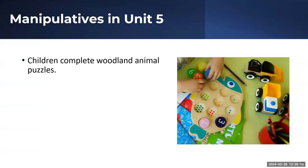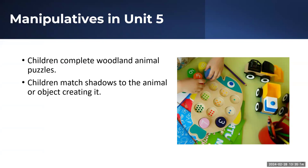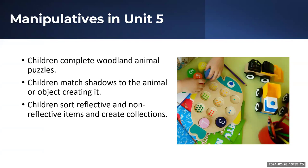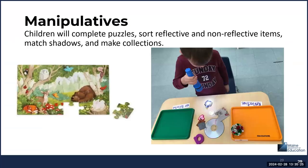In the Manipulatives Center for Unit 5, children will complete woodland animal puzzles, match shadows to the animal or object creating them, and sort reflective and non-reflective items and create collections. Connections may be made to all the unit books and concepts, and vocabulary and key concepts will be reinforced as well as other learning opportunities.